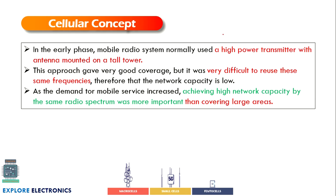In the earlier days, high-power transmitters were used — antennas mounted on tall towers to cover large areas. This gave good coverage, but frequency reuse was not possible and network capacity became slow. As demand for mobile service increased — meaning more users — achieving high network capacity using the same radio spectrum became more important than covering large areas. As the number of users increased, cellular providers needed to assign different frequencies for different communications without interference.